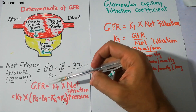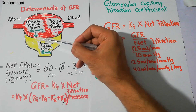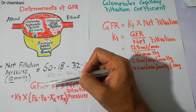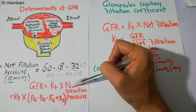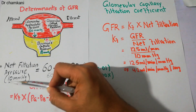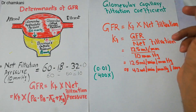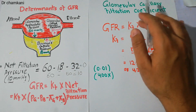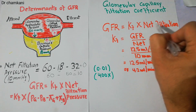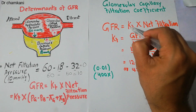To properly understand these topics, you should watch all the lectures about the renal system. Coming towards the Glomerular Capillary Filtration Coefficient: GFR is the product of the filtration coefficient and net filtration pressure. We know net filtration pressure is 10 mmHg, and GFR is 125 ml per minute. With this data, we can now calculate the Glomerular Capillary Filtration Coefficient. The coefficient equals GFR divided by net filtration pressure.